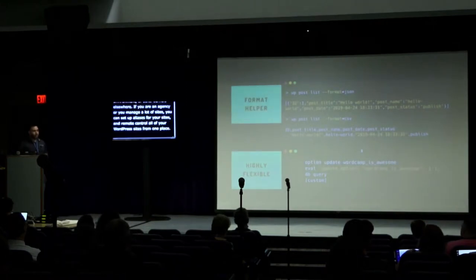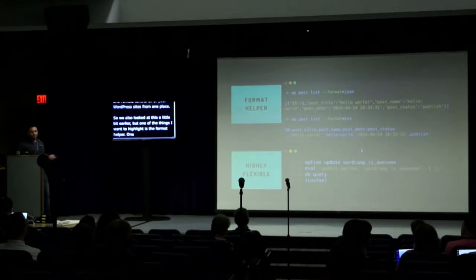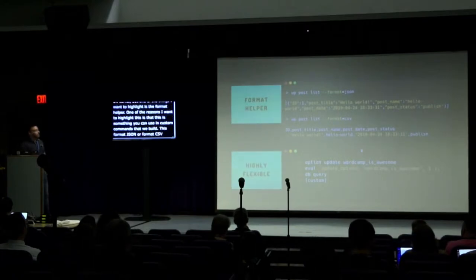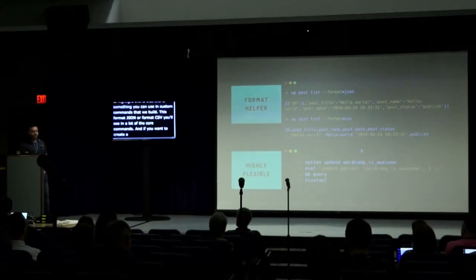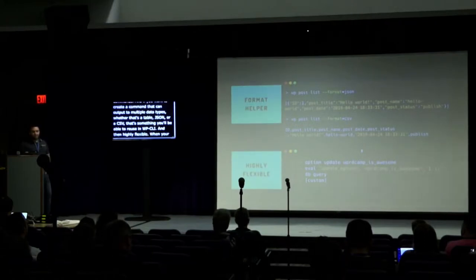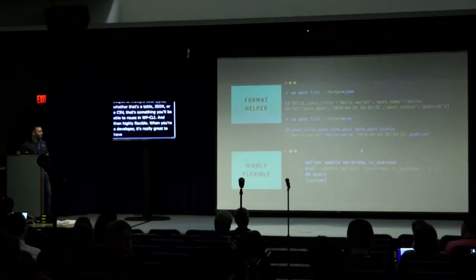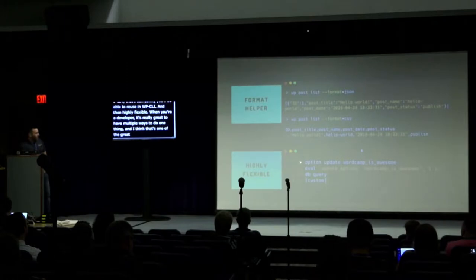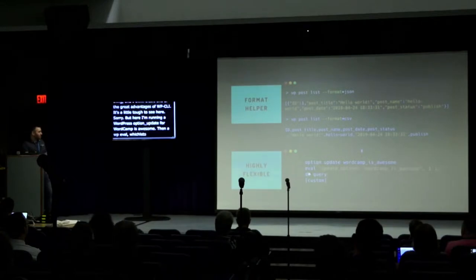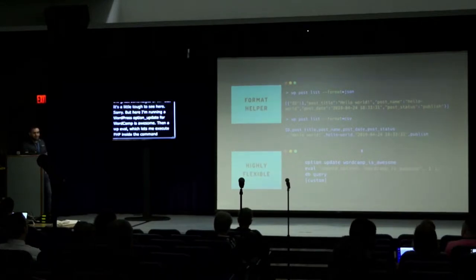Another thing to highlight is the format helper. This is something you can use in custom commands. The --format=json or --format=csv flag appears in many core commands, and if you want to create a command that outputs to multiple data types — table, JSON, or CSV — you can reuse that in WP-CLI. WP-CLI is also highly flexible. When you're a developer it's great to have multiple ways to do one thing. You can run WP option update, a WP eval to execute PHP inside the command line, a WP db query to write a MySQL query directly, or write a custom command.